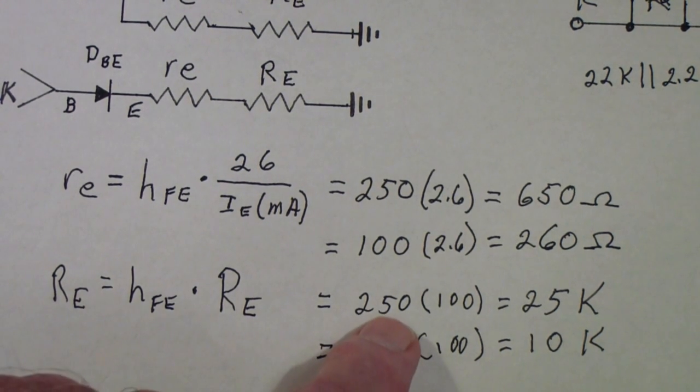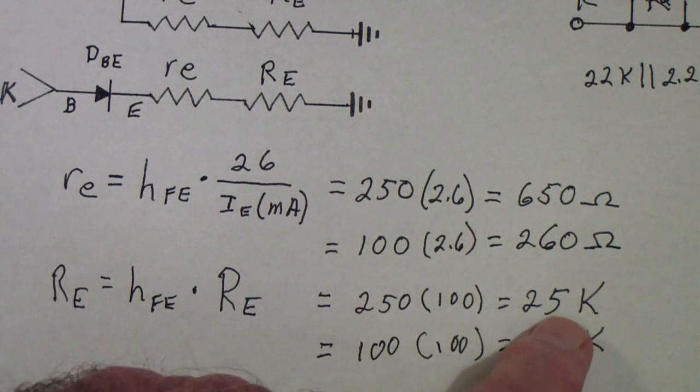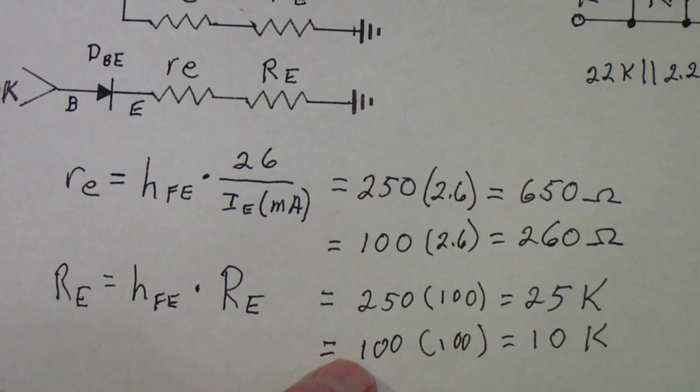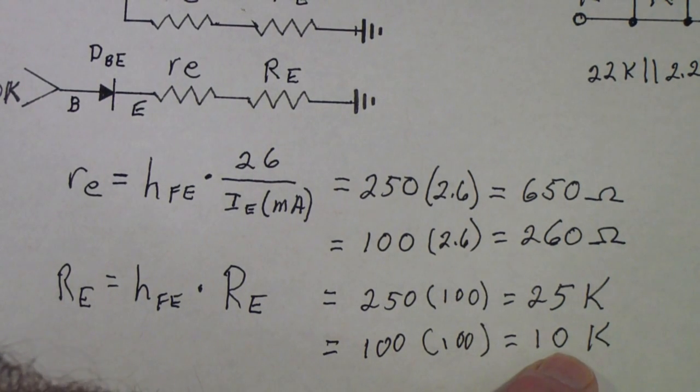Well, once again, for our transistor, that's going to be 25k. But even if the transistor is one that's at the very bottom of the HFE range, we still get 10k. So we're going to use 10k for our calculation.